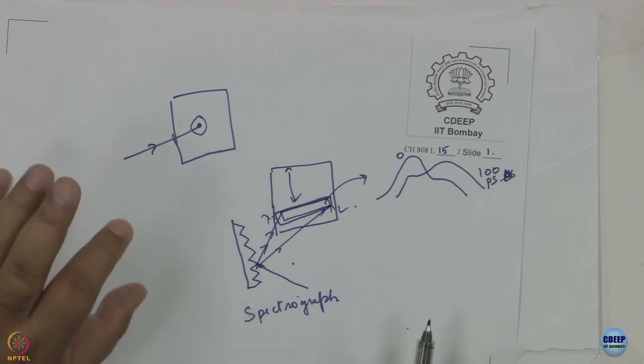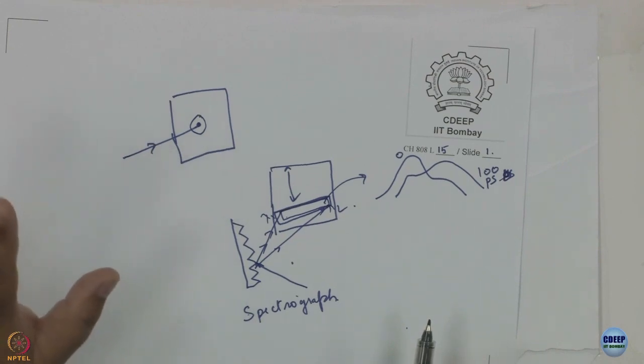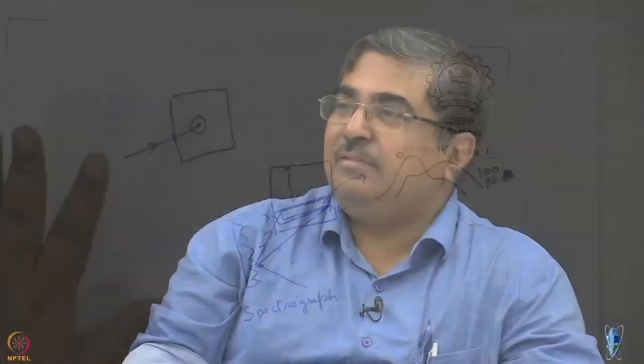The time resolution is not really as good as TCSPC, but 20 to 30 picosecond gate times are now doable. The good thing is the speed — the entire spectrum gets captured in one shot. Still, we are wasting almost all of the CCD when working in this mode. There is some way of using those pixels better — and that is where the streak camera comes in.